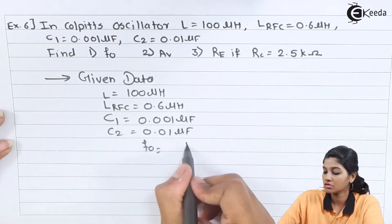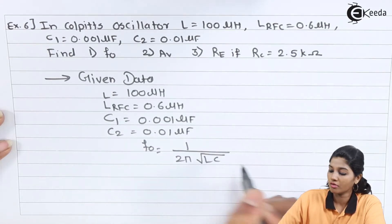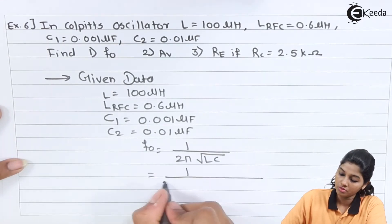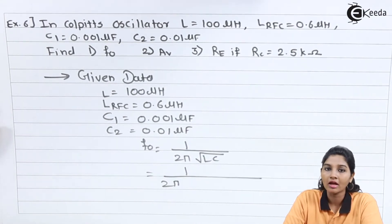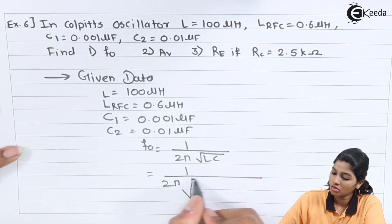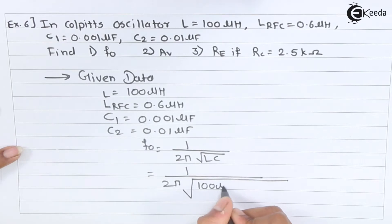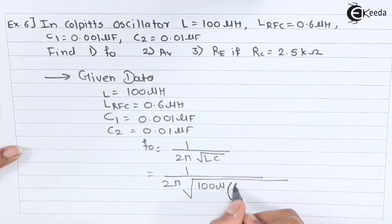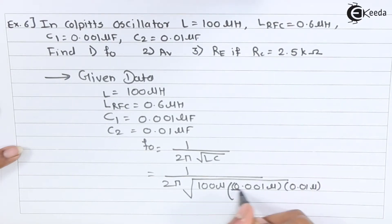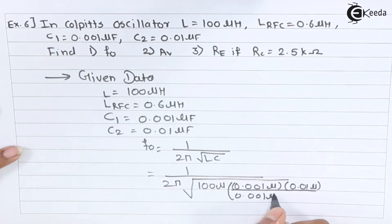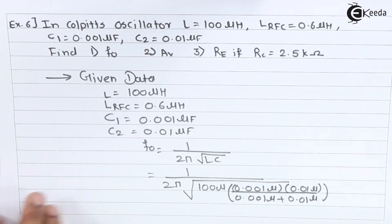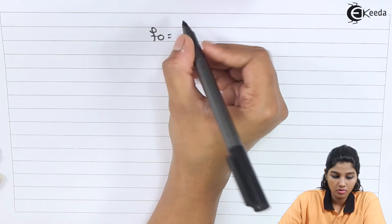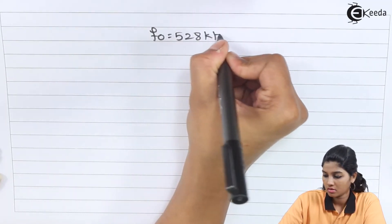Frequency of oscillation: f0 = 1/(2π√(LC)). We use the inductor value L = 100 µH (not the RFC value). C_eq = (0.001 µF × 0.01 µF)/(0.001 µF + 0.01 µF). This gives f0 = 528 kHz.